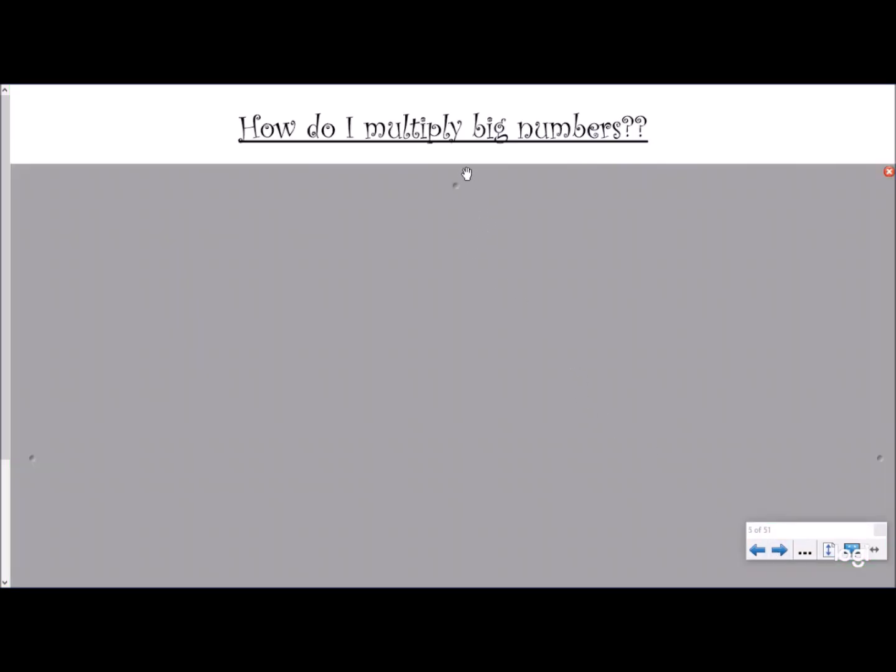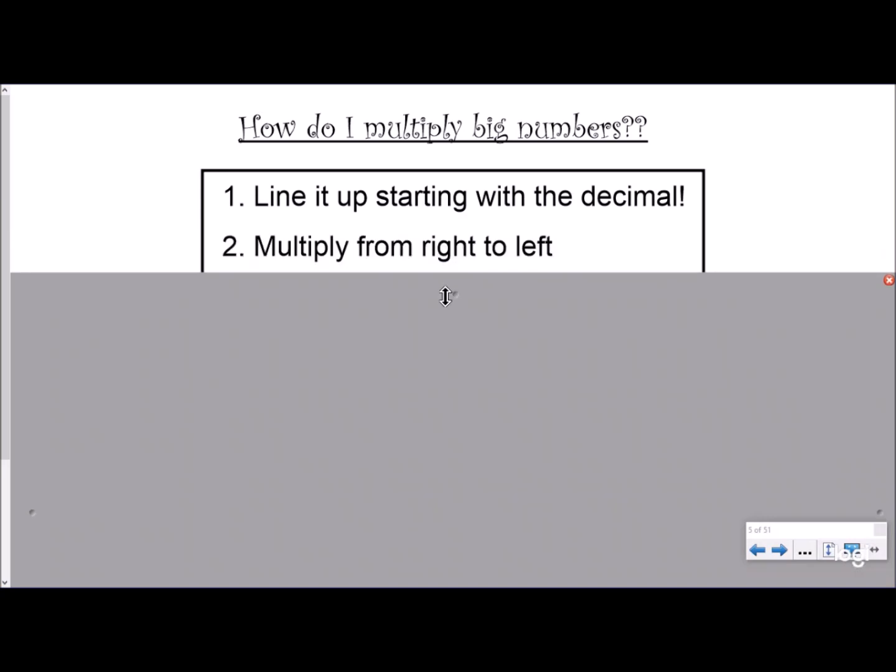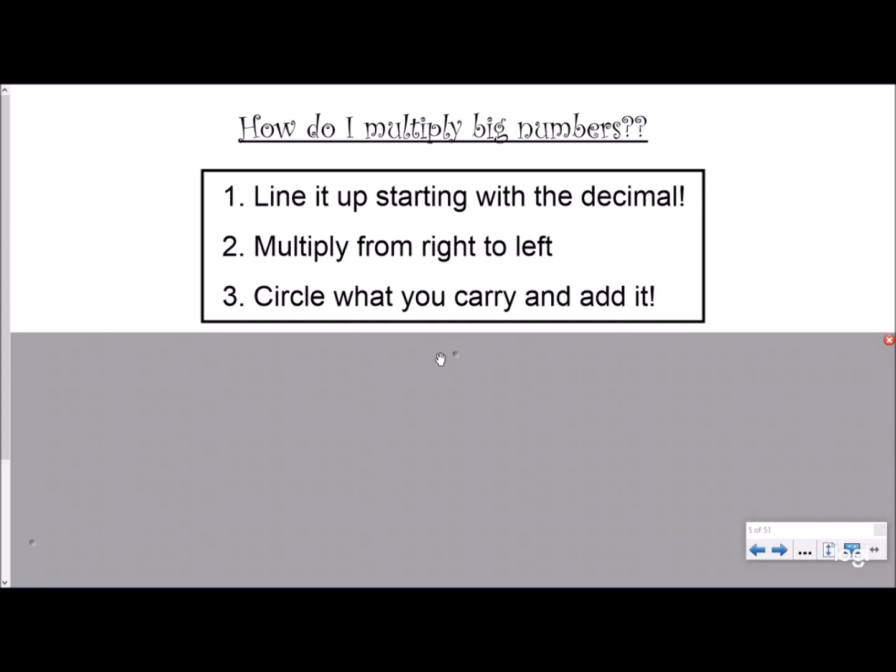So how do I multiply big numbers? So the first step is you want to line it up starting with the decimal, making sure your place values are lined up. We always multiply from right to left. And then we want to circle what we carry. In other words, carry is regroup. And we want to add it to our next place value after we multiply.